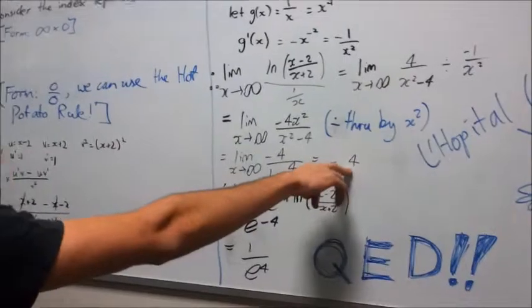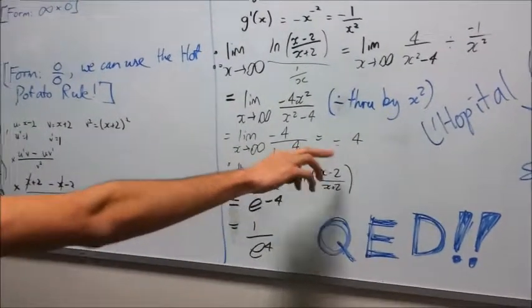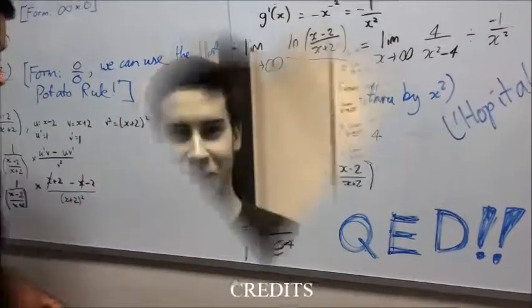And because this is the index that we've worked out from up here, we get e^(-4), which is equal to 1/e^4.